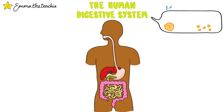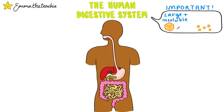The process of digestion is really important because the food that we eat can't be absorbed immediately. It's too large and insoluble. But digestion breaks it down into smaller soluble molecules, which can then be absorbed into the bloodstream.